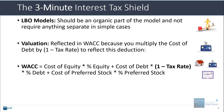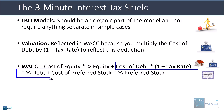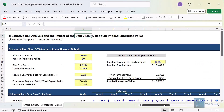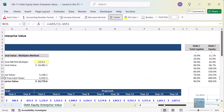The whole WACC formula takes the cost of each component of the company's capital structure and multiplies it by the percentage it represents. For the cost of debt, you always multiply by one minus the tax rate because interest paid on debt is tax deductible. I have an example in this Excel file, one used to illustrate equity value and enterprise value concepts.